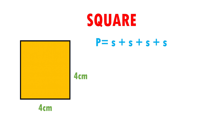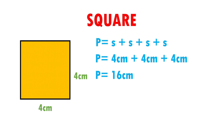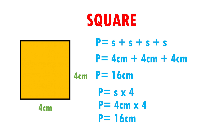Now I am going to substitute data. Perimeter is equal to 4 plus 4 plus 4 plus 4. Perimeter is equal to 16 cm. There is another formula to calculate the perimeter of the square: perimeter equals side times 4. The side is multiplied by 4 because there are 4 sides that measure the same. In this case, the measurement of the side is 4 cm, therefore perimeter equals 4 cm times 4, which gives us 16 cm. This means that the contour of the square measures 16 cm.